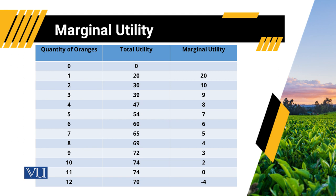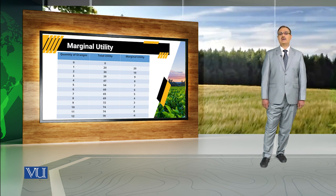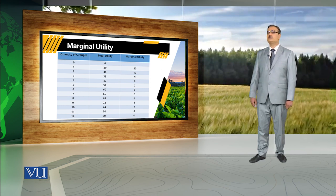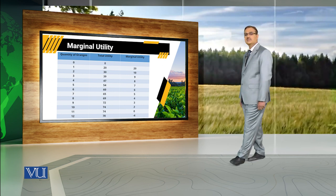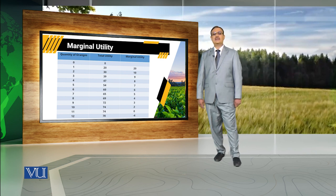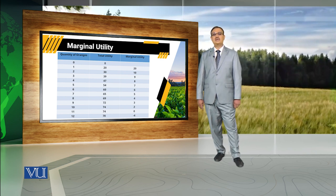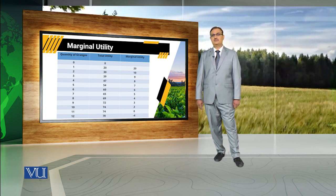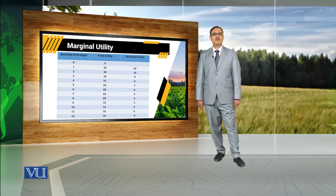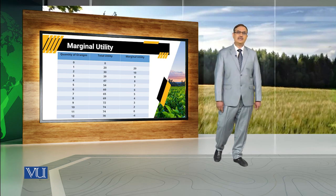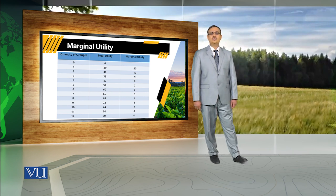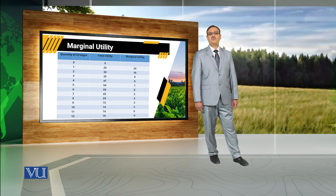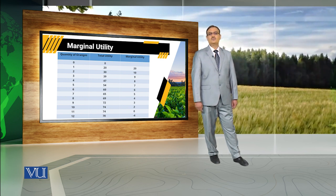We can see that up to unit 11, marginal utility is positive. But against the 11th unit of orange, marginal utility becomes 0, and after the 11th unit of oranges, marginal utility becomes negative. This is because against the 11th unit the consumer's utility is 74, while against the 12th unit the utility is 70. The difference between these two points is minus 4, so against the 12th unit of orange, marginal utility is equal to minus 4.